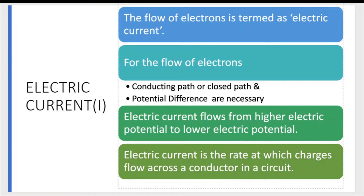A closed path alone is not enough — there must also be a potential difference and a power supply. Without a closed path, there is no electric current. Both conditions together allow us to realize electric current. Electric current flows from higher electric potential to lower electric potential, and it is defined as the rate at which charges flow across the conductor in a circuit.